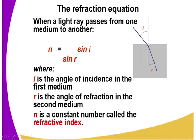The angles are taken from the normal at the interface where we have the two mediums, that is medium one and medium two. i in the formula stands for the angle of incidence in the first medium. r is the angle of refraction in the second medium. And n is a constant number called the refractive index.